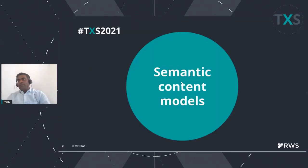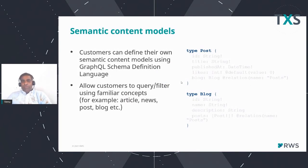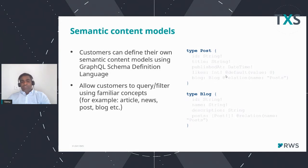Let's get on to how you can create semantic content models on the content delivery side or the DXD side. Basically, you can define your own semantic content model using GraphQL Schema Definition Language. By using this language, you can define your own schema — how it should look. For example, we defined a custom one called 'post' which has different fields: ID, title, and published date. Those things you can define in your GraphQL schema definition.